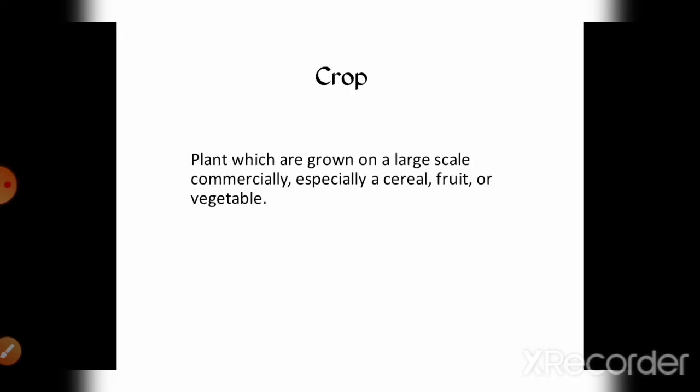Hello students, let's start Class 8th chapter: Crop Production and Management. First topic: crop. When plants are grown on a large scale and of the same kind, they are called crops. When a large number of the same type of plants are grown in fields for commercial purposes, they are called crops.